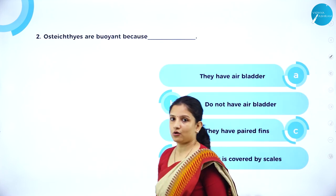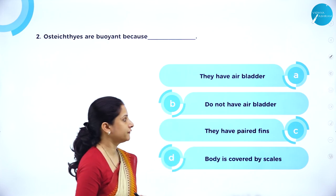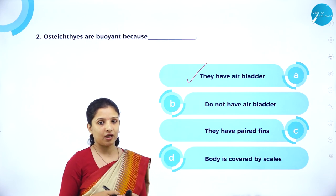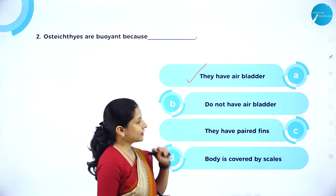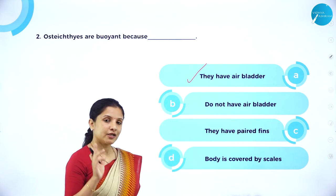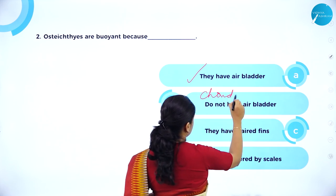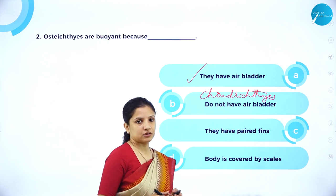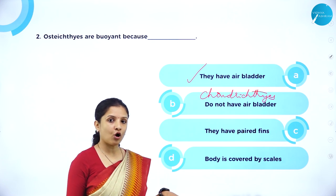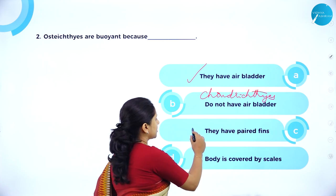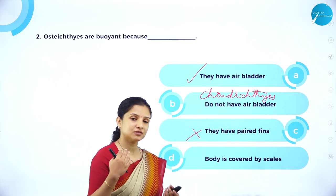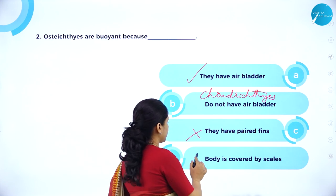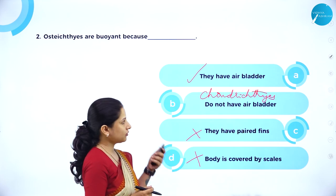MCQ 2: Osteichthyes are buoyant because they are capable of floating in water. Why? Because they have an air bladder which gets filled with air, giving them the ability to float. Chondrichthyes do not have an air bladder, which is why they must keep swimming continuously to prevent drowning. Paired fins help in swimming but stopping fin movement causes drowning. Scales act as a water repellent but are unrelated to buoyancy. So the correct answer is option A — having an air bladder.